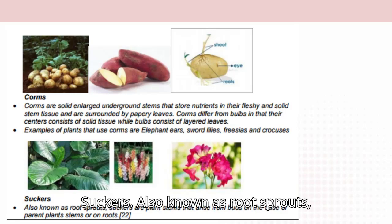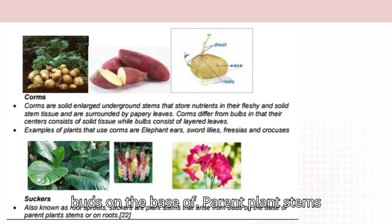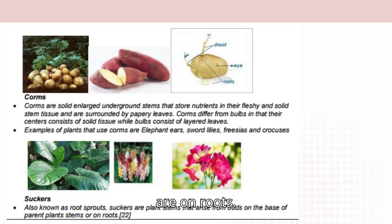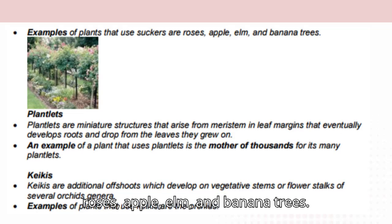Suckers, also known as root sprouts: suckers are plant stems that arise from buds on the base of parent plant stems or on roots. Examples of plants that use suckers are roses, apple, elm, and banana trees.